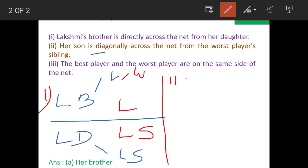And the second one - let's extend the net here. Lakshmi's brother will remain as it is. Lakshmi's daughter will remain as it is. Now in this case, if Lakshmi's son is worst player, then he is playing diagonally opposite to his sibling. So that means Lakshmi's son will come here and Lakshmi will come here. So now in both the cases, we have to find out who is the best player.